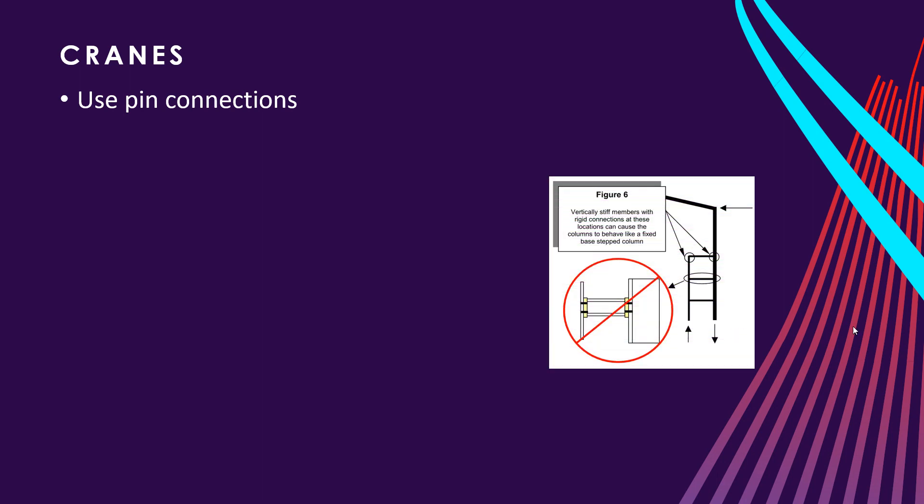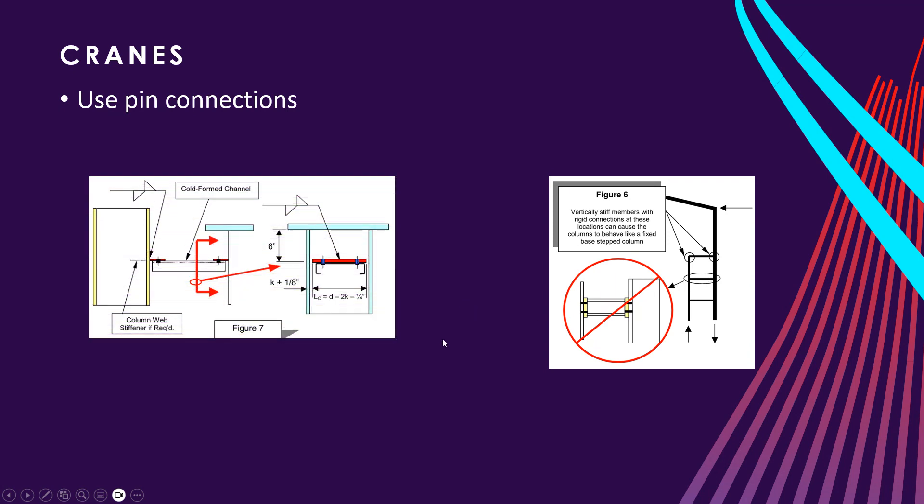Use pin connections. So when you're doing those weak axis braces on your columns, don't do it like this because it does put some rotation in there, right? It just snaps those bolts over time. There's a lot of fatigue involved. Here you see a pin-type connection for the weak axis braces.